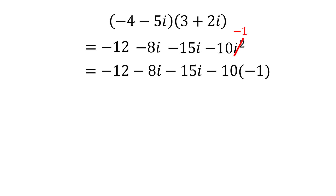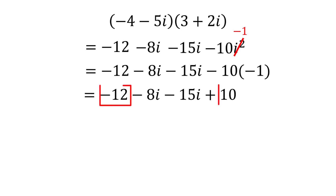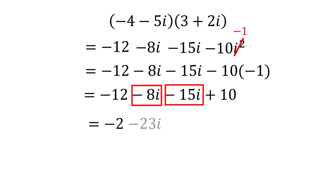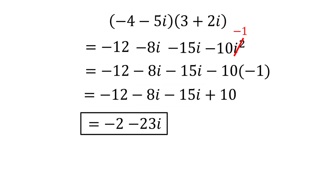This can again be rewritten as negative 12 minus 8i minus 15i plus 10. Now we can combine our real and imaginary components. Negative 12 plus 10 is negative 2, and negative 8i minus 15i is negative 23i. Altogether, we have negative 2 minus 23i, which is in standard form, a plus bi. Alright my friends, that completes our discussion of imaginary numbers.